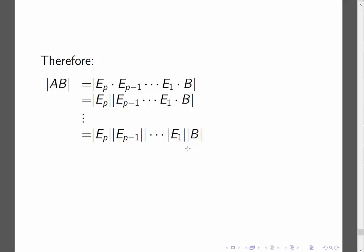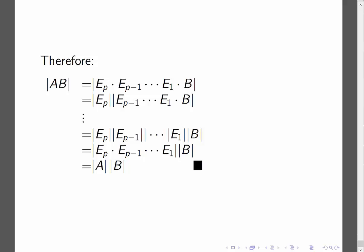The reverse of that theorem says that if you can take one elementary matrix out, you can also put it back in. So I place all of these elementary matrices back together, ending up with the matrix A. And that gives us that the determinant of AB equals the determinant of A times the determinant of B. Ta-da!